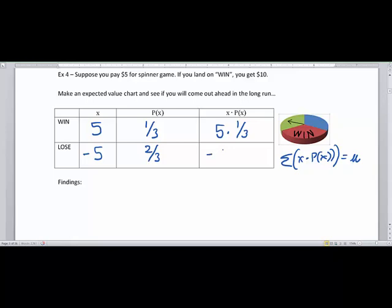So here I'm going to take my negative 5, which is my event, and multiply it by two-thirds. And there's my x times p of x. So if I go 5 times a third, this gives me 1.6 repeating, or I'm going to round it to 1.67, $1.67. Now if I multiply the negative 5 times two-thirds, this gives me negative $3.33, because it's 3.3 repeating.